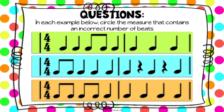Here on our next slide they tried to trick us — some of these measures have an incorrect number of beats inside. Remember that we're looking for four beats in a measure, but some of these are not going to have four. So take a look at the green example on the top and try to guess which one of those two measures has an incorrect number of beats.